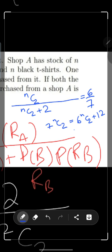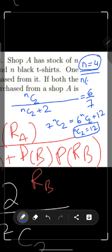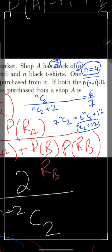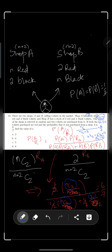After simplifying we get NC2 equals 12. Using the formula N(N-1)/2 = 12, so N(N-1) = 24, which gives N equals 4. You will also get the value minus 3, but minus 3 is not possible since N must be a positive value — the stock cannot be negative. So N equals 4. Thank you.